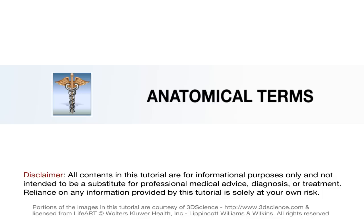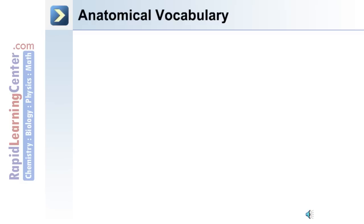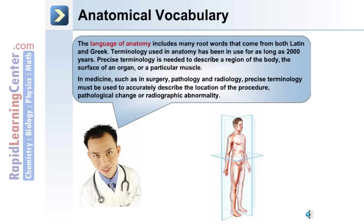We'll now move on to discuss anatomical terms. The correct description and anatomical location of key areas in the body require certain anatomical vocabulary and directions. We'll also discuss sectional anatomy. The language of anatomy includes many root words that come from both Latin and Greek, from as long as two thousand years ago.